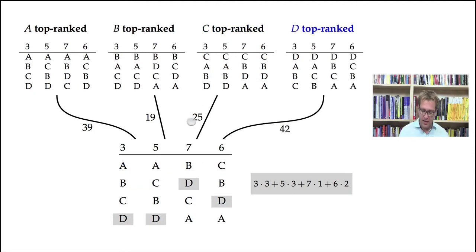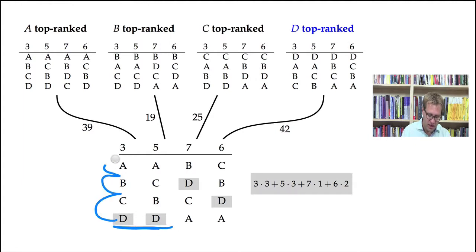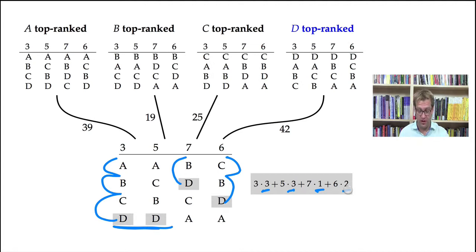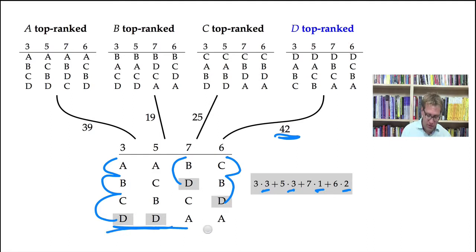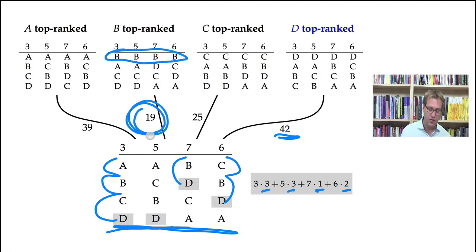Finally, to move D requires many moves. The first two columns need to move D three positions, the second column needs to move D just one position, and the last column needs to move D two positions. This gives a total distance of 42. The consensus profile that is closest to the profile we're given is the one where B is ranked at the top, at a distance of 19. So B is declared the winner. If you pause the video and check, B is also the Borda count winner.